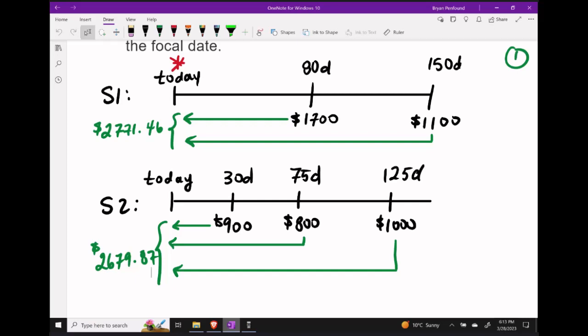If this was a payment stream paying us, instead of us paying back a bank or something like that, we'd probably prefer stream number one. However, if these were payments we had to make to somebody else, we'd probably prefer stream number two since it's the lesser of the two.